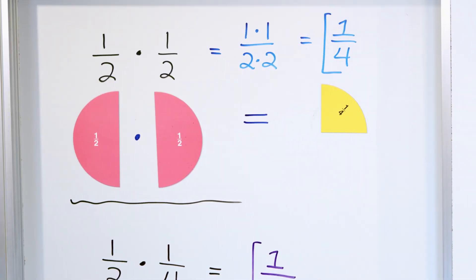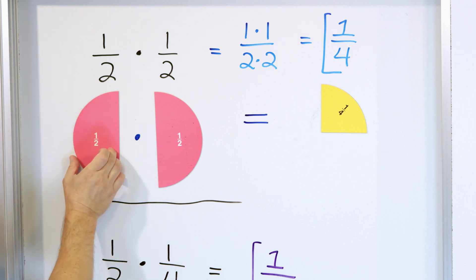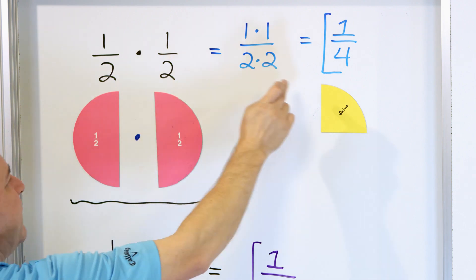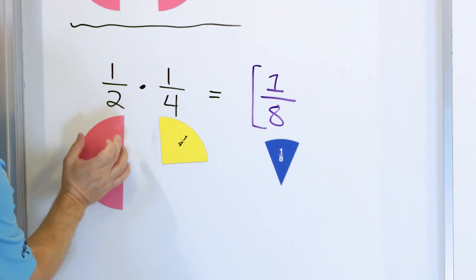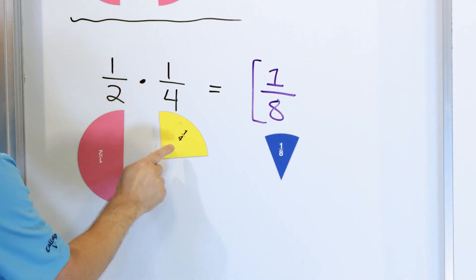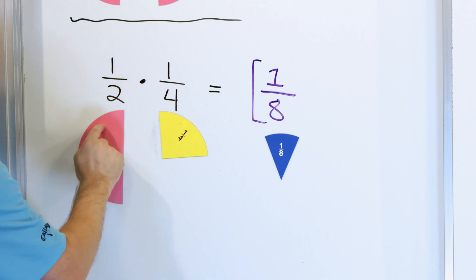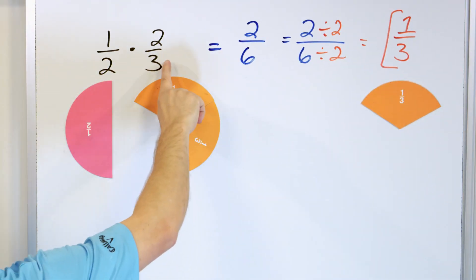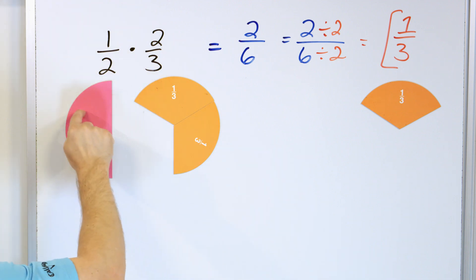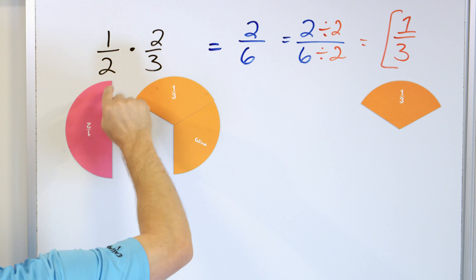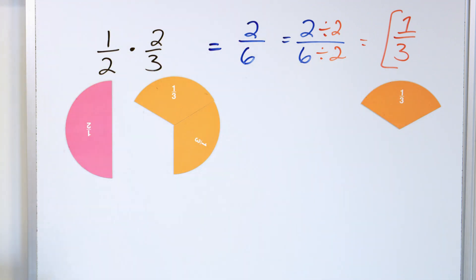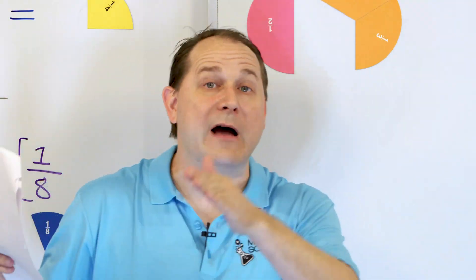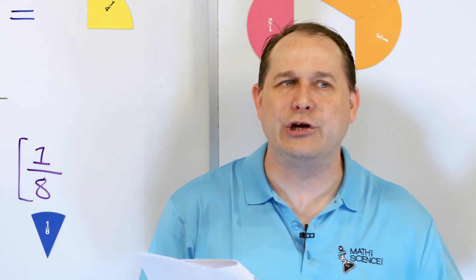To recap: we start with what we are given — one half. We chop it by one half, meaning we cut it into two pieces and keep one, giving one fourth. We started with half a pizza, cut it into four equal pieces and kept one, giving one eighth. And we started with one half, cut it into three equal pieces, kept two of them, and got one third.